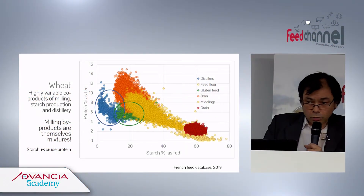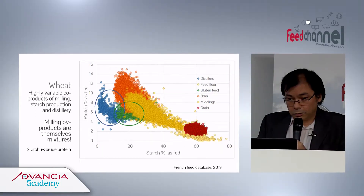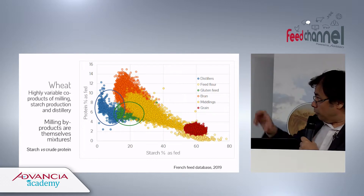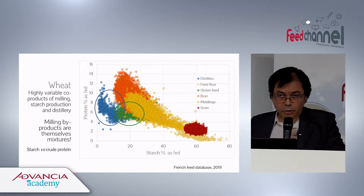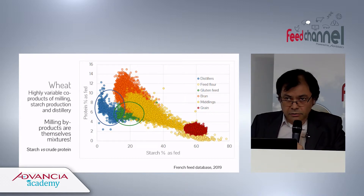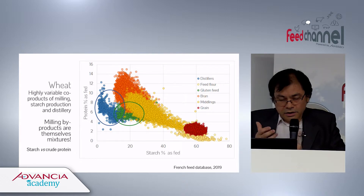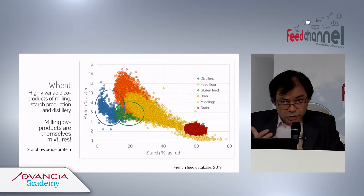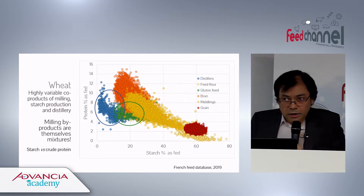This is a graph that shows the red dots on the right are the wheat grain. You see that the wheat grain is variable, but it's much less variable than the other byproducts. The big yellow banana represents all the byproducts — the middling, the shorts, and then you've got the bran and the wheat flour. This is driven by the expression of starch, and what we call middling — the big banana in the middle — it's huge.